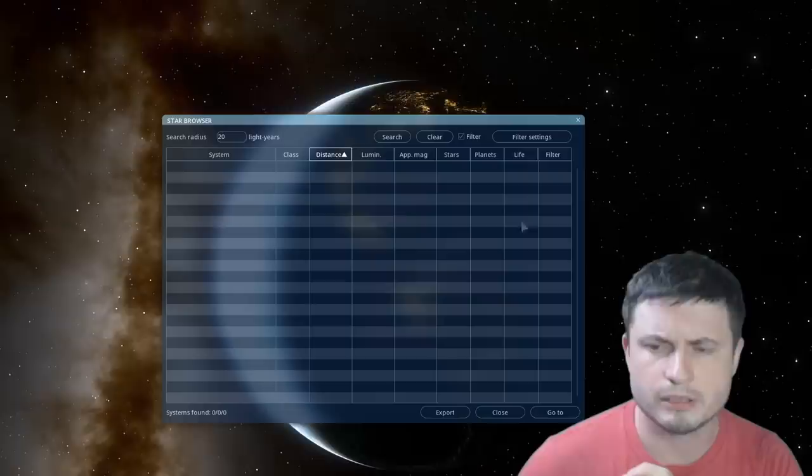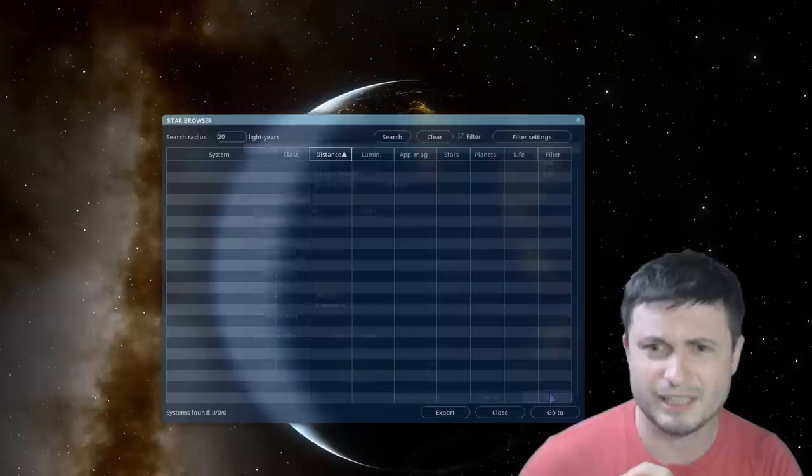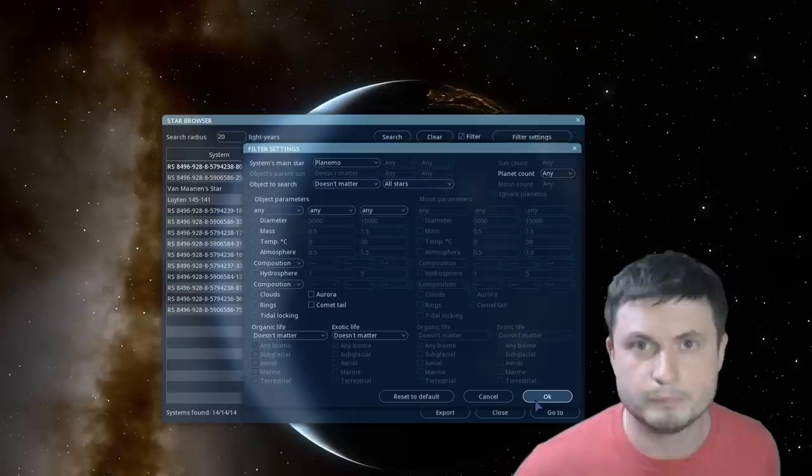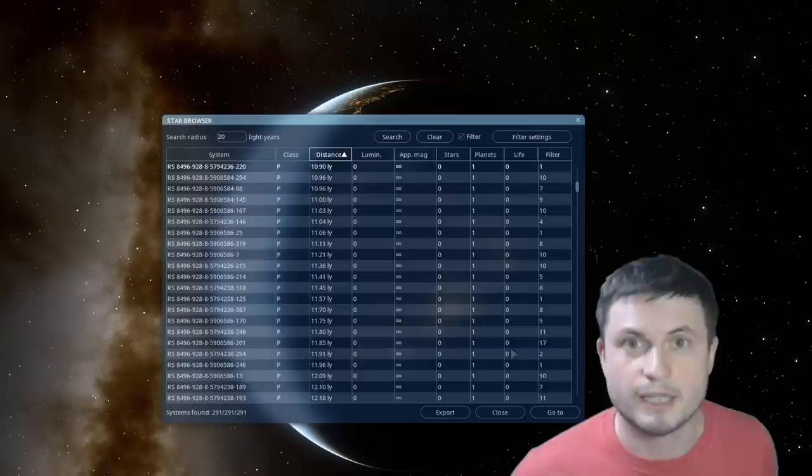Also nothing. Neutron stars? Nothing. Black holes? Also nothing? What about, oh I know, white dwarfs? Okay, there are a few, but that's not something I wanted to talk about. How about planemos, also known as rogue planets? Yeah, there seem to be quite a lot.